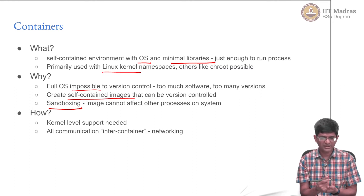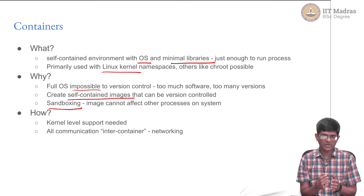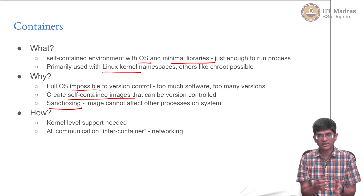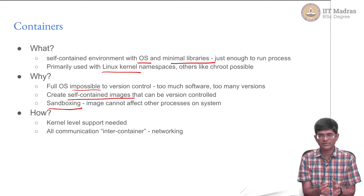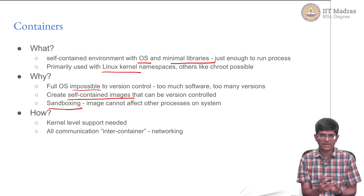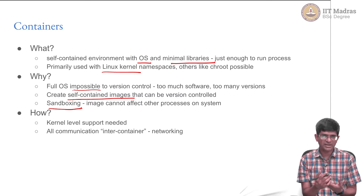The what and the why are relatively clear; the how is the next important part, and over there you definitely need some support from the operating system kernel — the part that directly talks to the hardware and manages resources. When we say Linux, people usually refer to Ubuntu, but Ubuntu is a particular distribution of Linux; Linux is the kernel running inside the computer. You might have the same Linux kernel in an Ubuntu system, a Red Hat system, or an OpenSUSE system. The kernel manages resources, and you could potentially even have containers with other operating systems like Microsoft Windows, but the most popular ones right now are Linux-based.